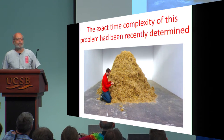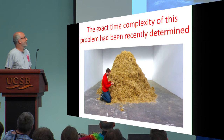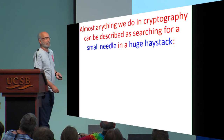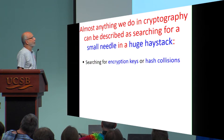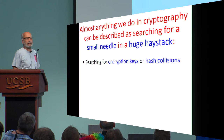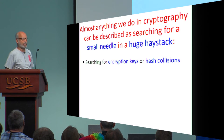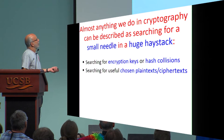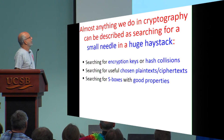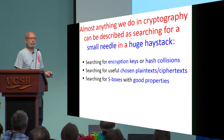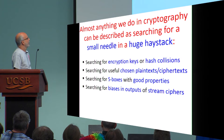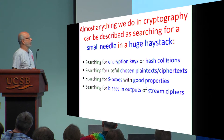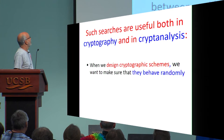There is still something to do in this problem, and the problem is actually very general — almost anything we do in cryptography can be viewed as some kind of search for needles in exponentially large haystacks. Just to give you a few examples: whenever we are looking for encryption keys, hash collisions, chosen plaintexts or ciphertexts useful to attack cryptosystems, S-boxes with good differential or linear properties, or searching for biased outputs of stream ciphers.